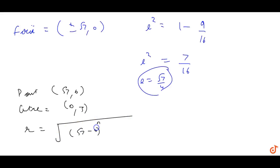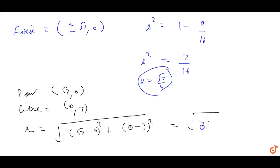The radius squared is (0−3)² plus 7, which gives 9 plus 7 equals 16, so r² = 16.